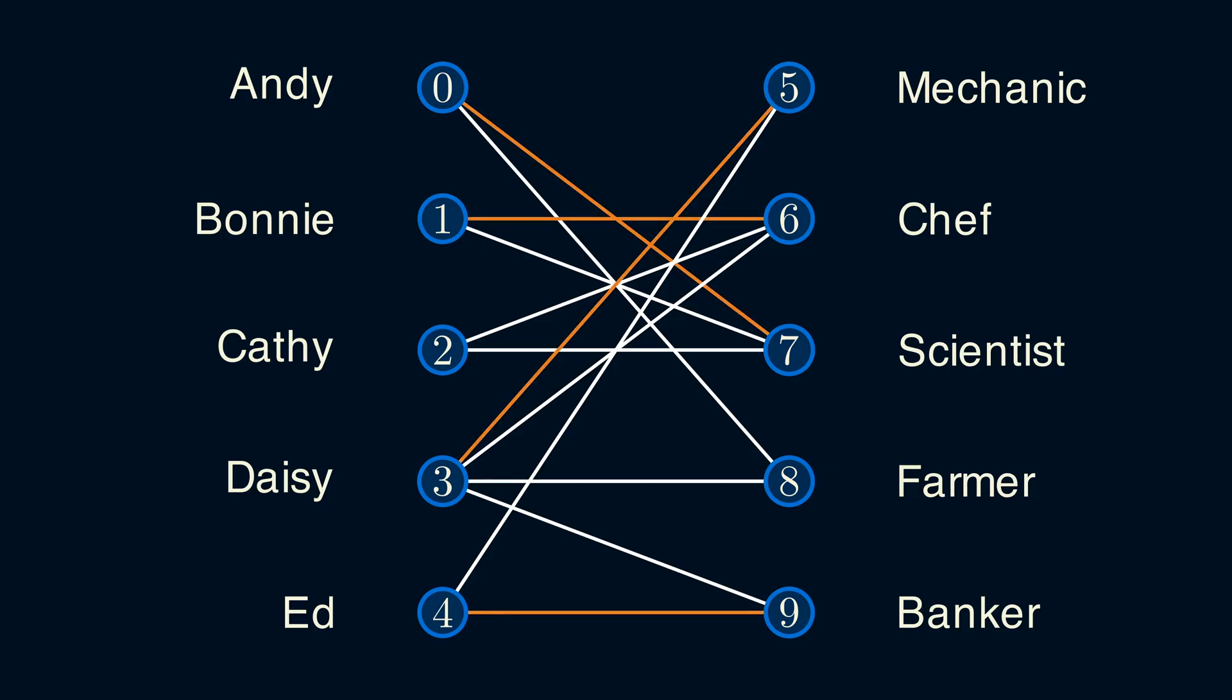Now we'll try to match jobs to people. This is one possible assignment. Here, Andy is a scientist, Bonnie is a chef, Daisy is a mechanic, and Ed is a banker. But there are lots of other possible matchings, like this one. This, however, is not a matching.